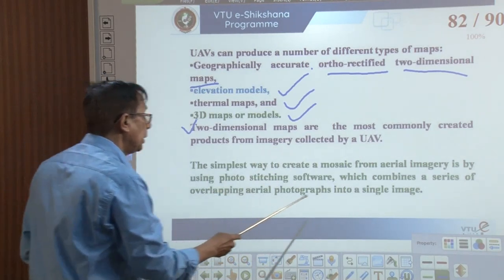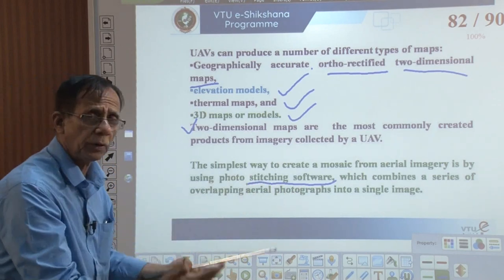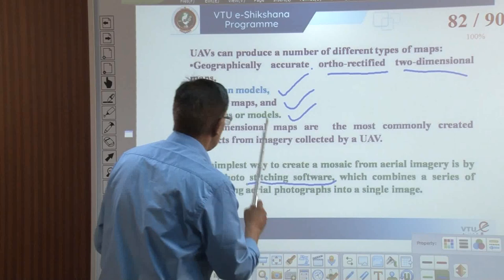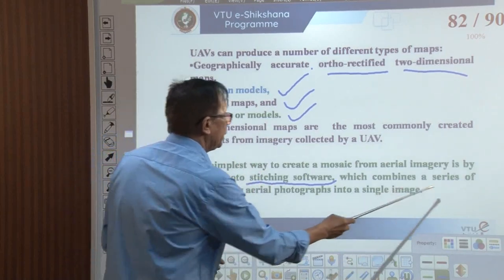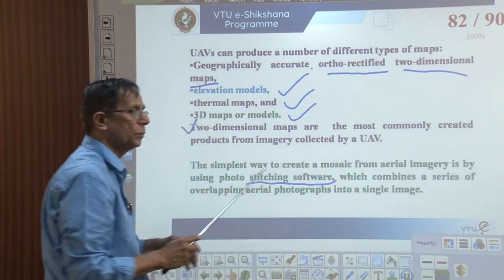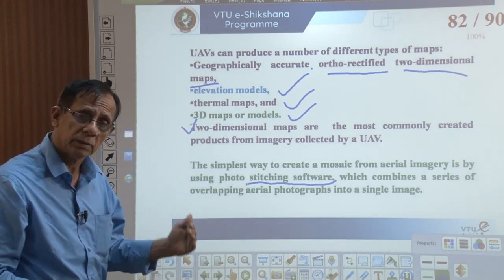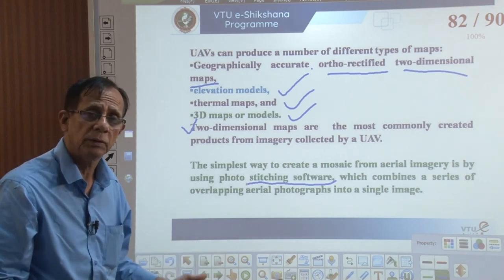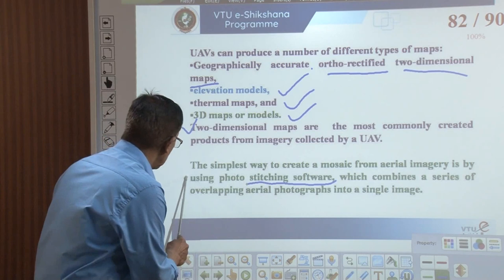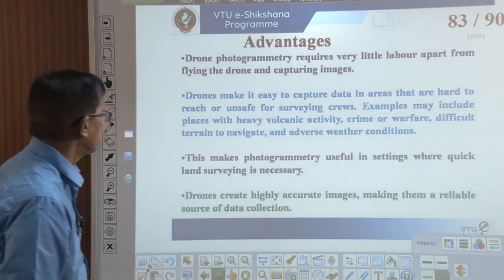We use software to stitch different photographs together. The software comes with different types of drones. It can combine a series of overlapping aerial photographs into a single image — here also the principle is similar to that of aerial photography, with overlap, and we can stitch and generate the final image.